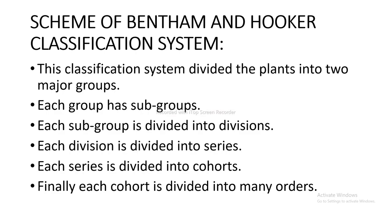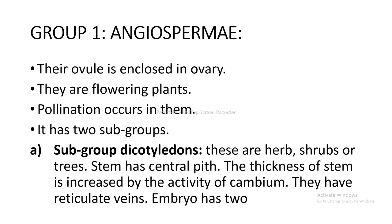The scheme of the Bentham and Hooker classification system divides plants into two major groups, each with subgroups. Each subgroup is divided into divisions, each division into series, series into cohorts, and finally each cohort into many orders. Group 1 is Angiosperms: their ovules are enclosed in ovary and they are flowering plants. It has two subgroups. The first subgroup is Dicotyledons: these are herbs, shrubs, or trees; the stem has a central pith; thickness is increased by cambium activity; they have reticulate veins; and the embryo has two cotyledons.